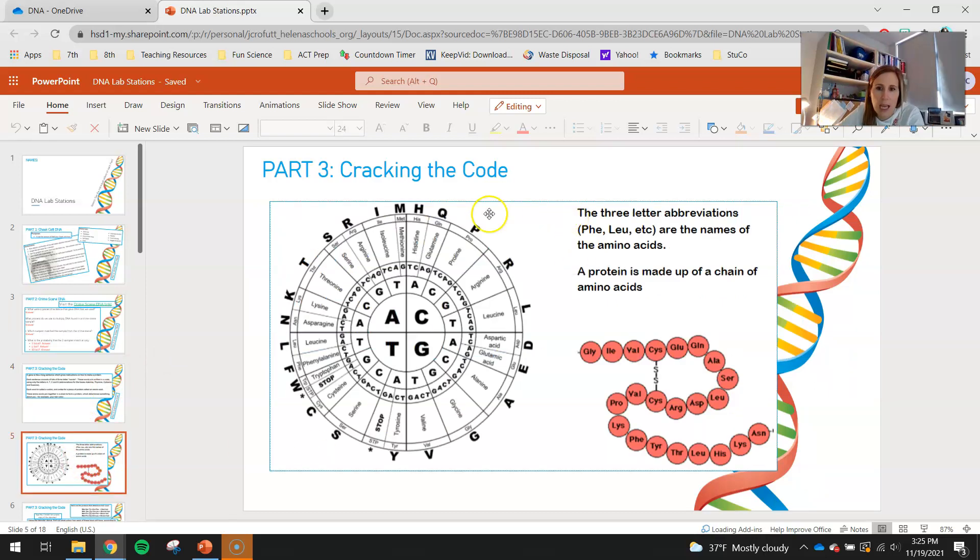Let's take a look at this next slide. This is kind of a fancy little decoder ring that you guys get to use. The three-letter abbreviations, P-H-E, L-E-U, etc., are the names of the amino acids. There's only 20 types of amino acids that make up all the proteins in our body.